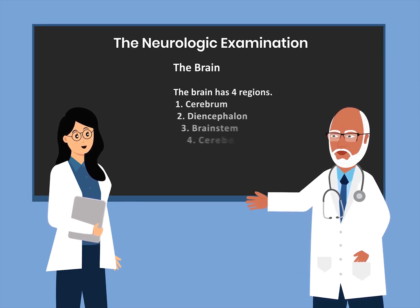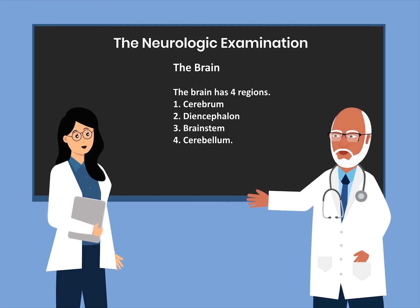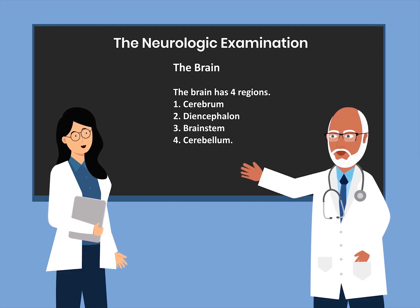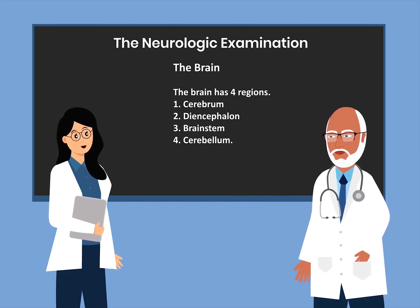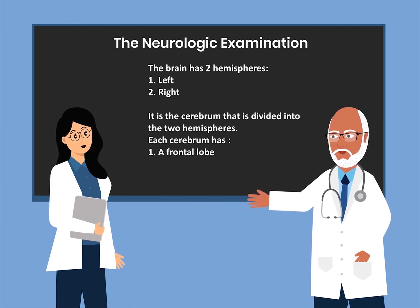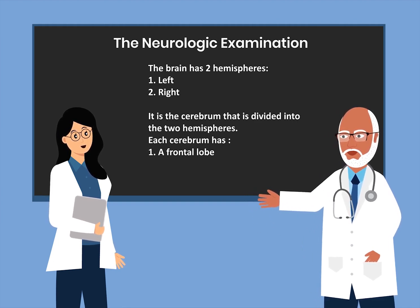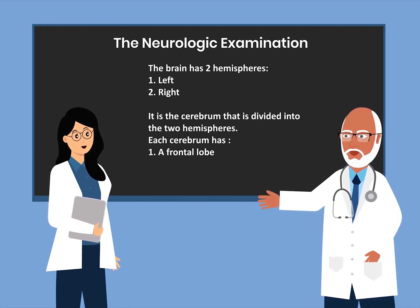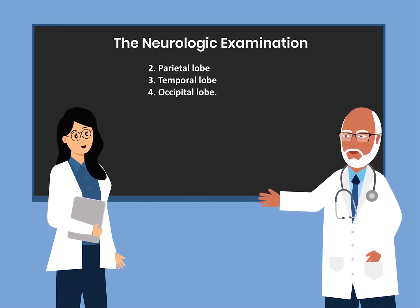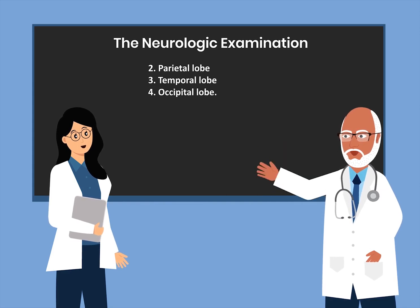The brain has four regions: the cerebrum, the diencephalon, the brainstem, and the cerebellum. The brain has two hemispheres, a left and a right. It is the cerebrum that is divided into the two hemispheres. Each cerebrum has a frontal lobe, a parietal lobe, a temporal lobe, and an occipital lobe.